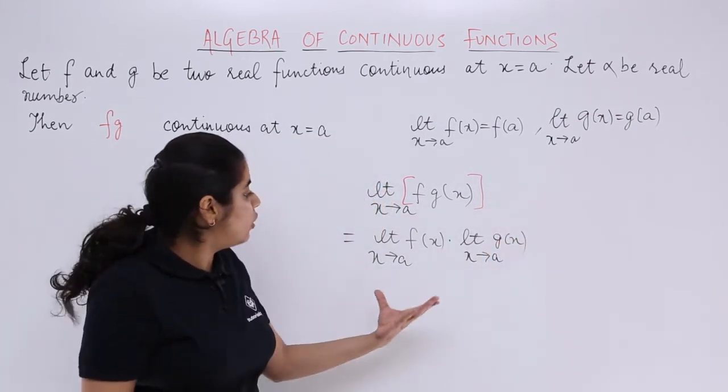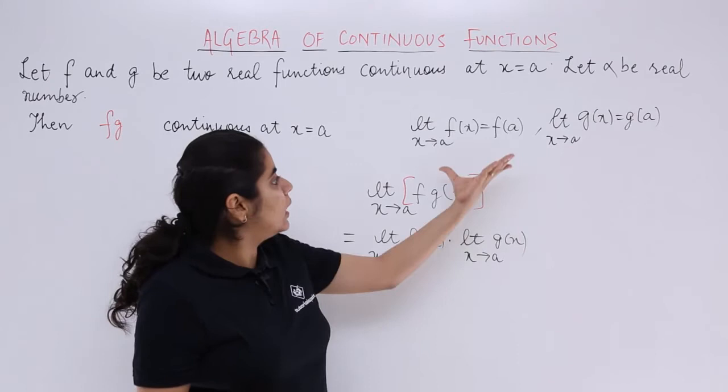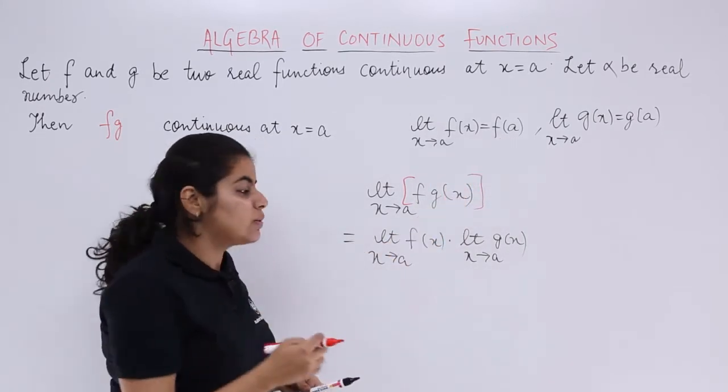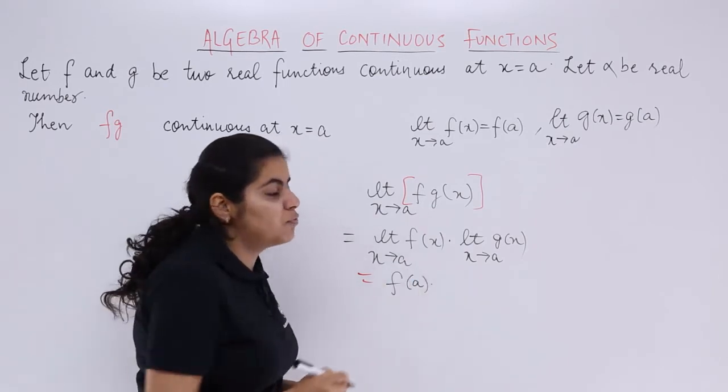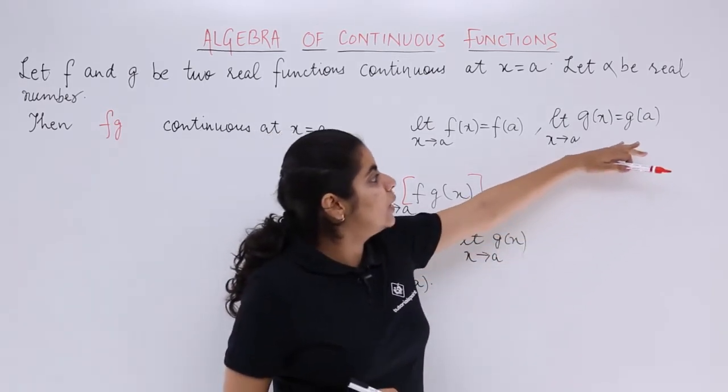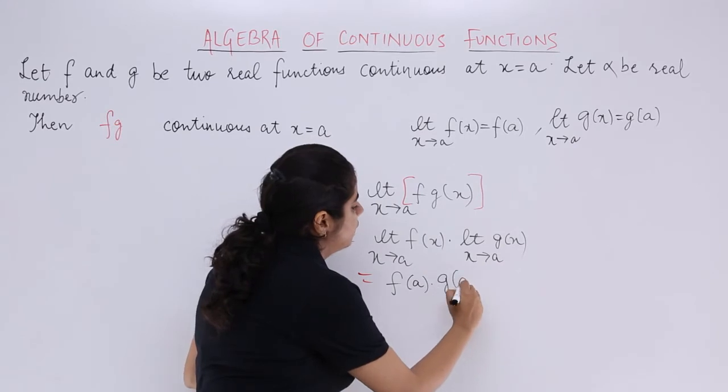Now what is the value of limit f(x) as x tends to a? It is equal to f(a). So I write it equal to f(a). What about limit g(x) as x tends to a? It is equal to g(a). So it is equal to g(a). Now these are products.